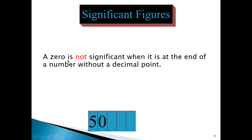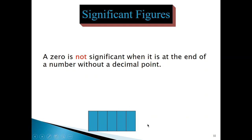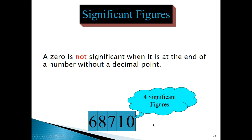A zero is also not significant when it is at the end of a number without a decimal point. So if there is no decimal point and you have zeros at the end of the number, those zeros are not significant. For example, with no decimal point shown and four zeros at the end, the only significant digit is the five. In another example with one zero at the end and no decimal point, that zero is not significant — therefore, there are only four significant digits represented in that number.